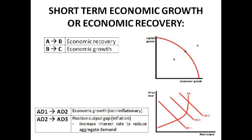This is illustrated on a Keynesian curve. From AD1 to AD2, we have economic growth that isn't particularly inflationary — there's a small rise in price level but a much greater rise in real output. Whereas from AD2 to AD3, there's hardly any increase in output but a massive rise in the price level, because there's too much aggregate demand — more demand than the supply available, so prices rise to eliminate this excess demand.